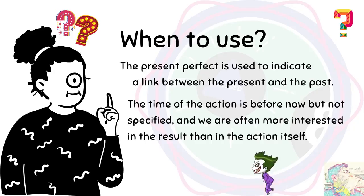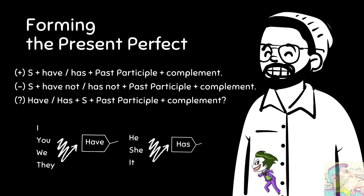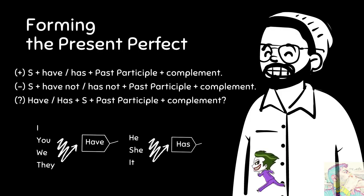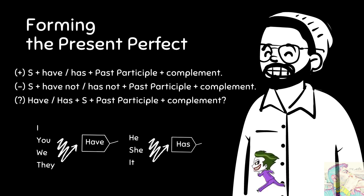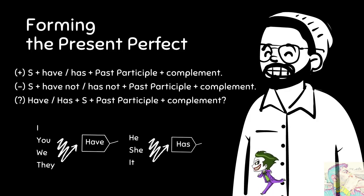Next, how to form present perfect sentences. You can take a look at your screen. Intinya harus menggunakan have atau has sebagai auxiliary verb, and then past participle — atau verb bentuk ketiga. Jadi selalu verb bentuk ketiga. Gampangnya dalam bahasa Indonesia diartikan dengan kata 'sudah': I have done my work — saya sudah membereskan kerjaan saya.